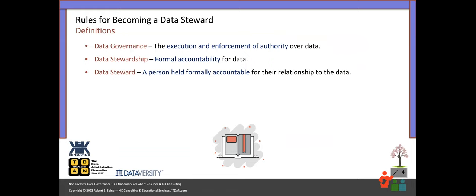I refer to data governance as being the execution and enforcement of authority over data. I know that's worded very strongly, but when it comes to regulatory control and improving the quality of data, you need to be able to execute and enforce authority. It doesn't mean you have to be invasive in your approach. It just means that there are certain rules — if we're going to improve our data situation — that we need to execute and enforce authority over.